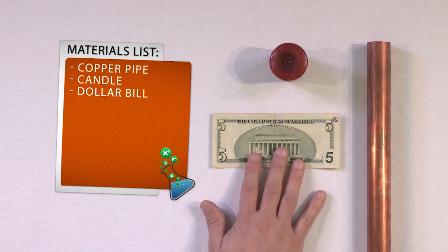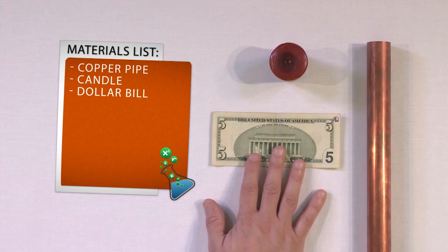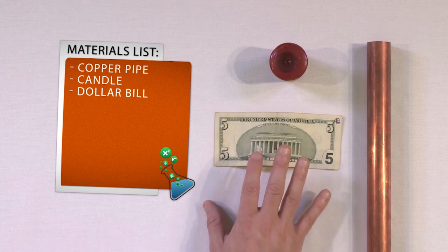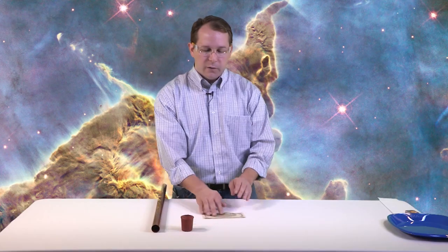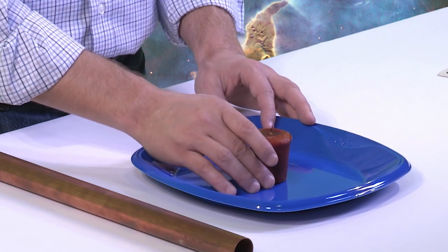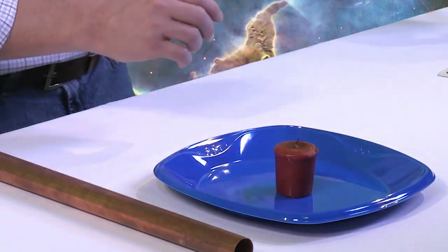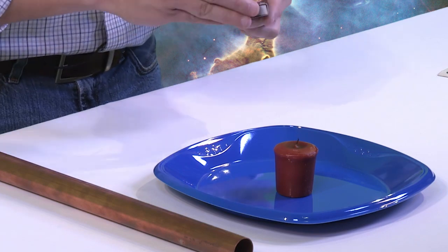You need a candle and you need a dollar bill or a five dollar bill, or if you're really brave you could use a twenty dollar bill or even a hundred dollar bill. Once you see how this works, you'll see how impressive the experiment is. So what we need to do is first light our candle and we're going to just put it on a nice plate just to keep it out of the way and sort of protect it from our table top here.